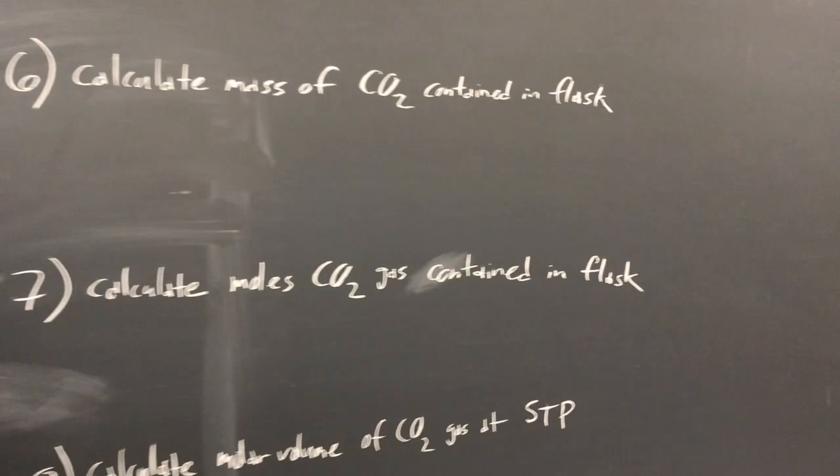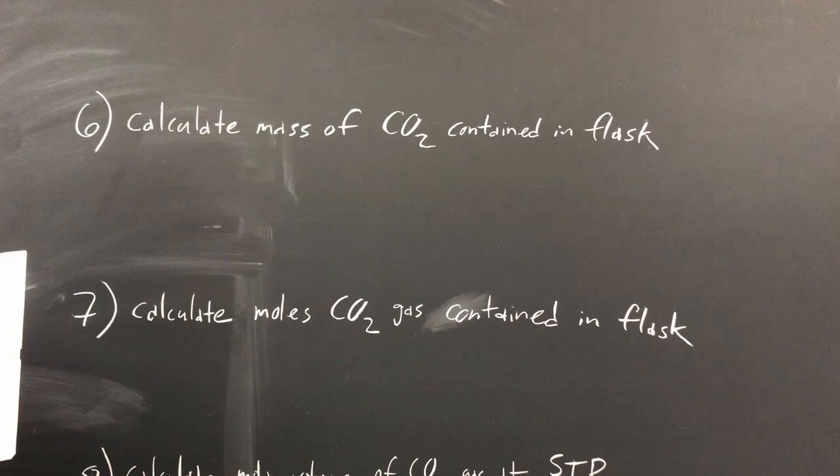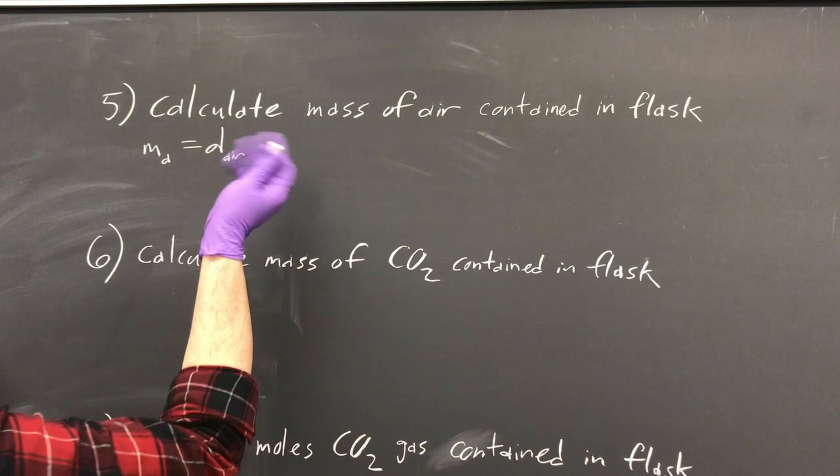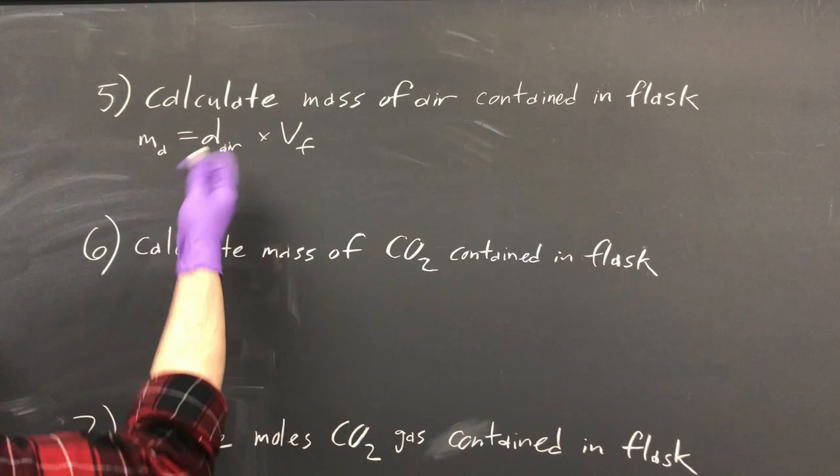So now we have to calculate the mass of air contained in the flask. So the mass of air equals rho, or you can also just write D for density of air, times volume of the flask. So that's pretty simple.